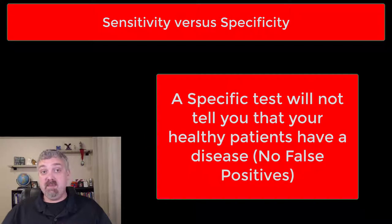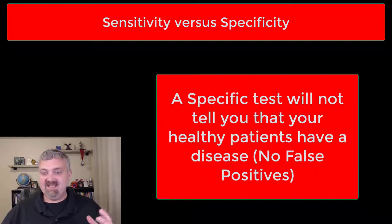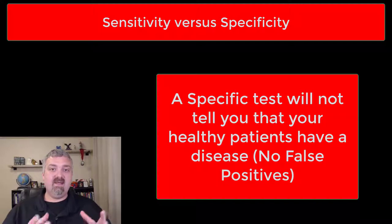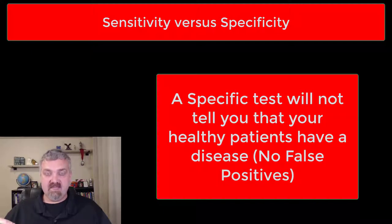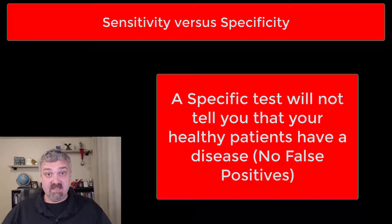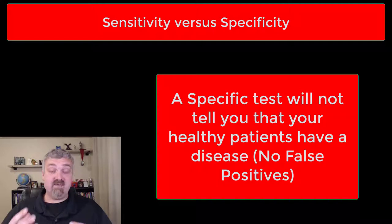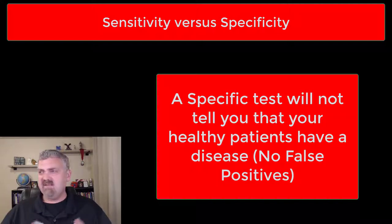Specificity would be: I know my patient doesn't have a disease — what are the chances that the test is going to say that they have or don't have it? So specificity means no false positives. If someone doesn't have a disease, what are the chances that the test comes back and says that they do? That's what a false positive is.